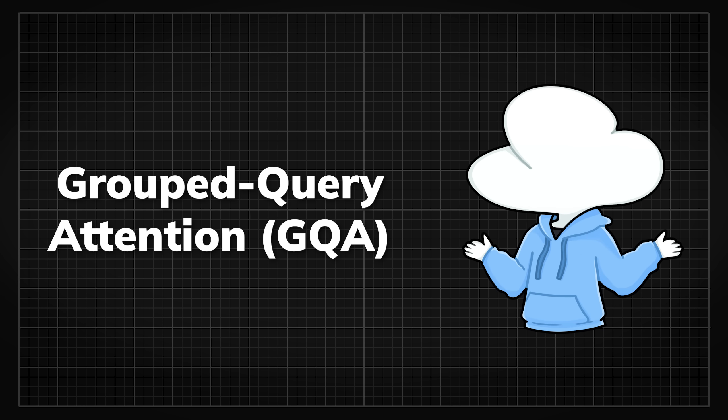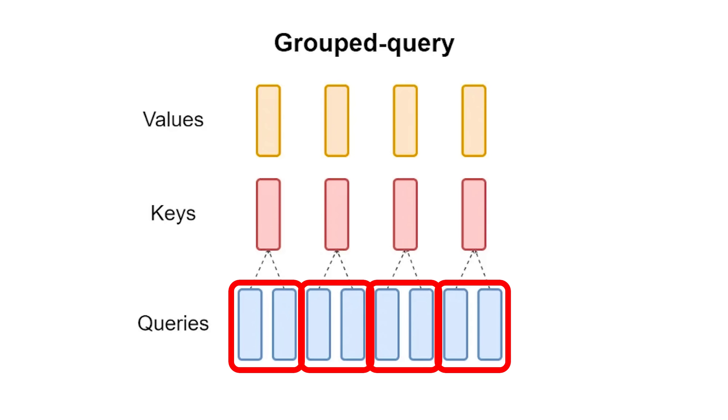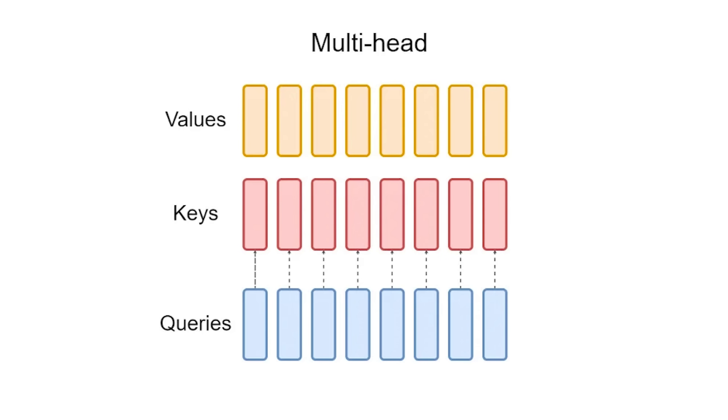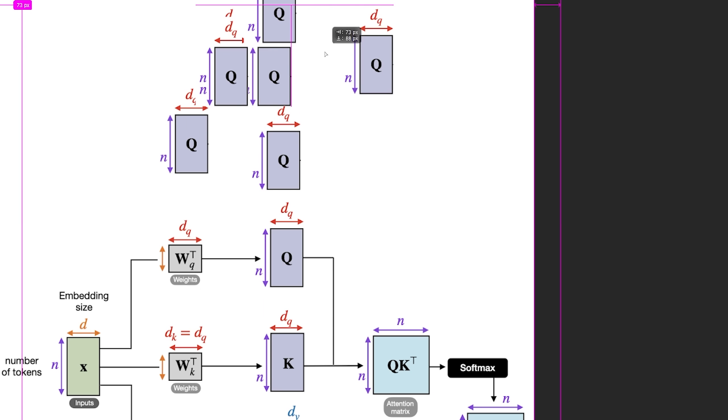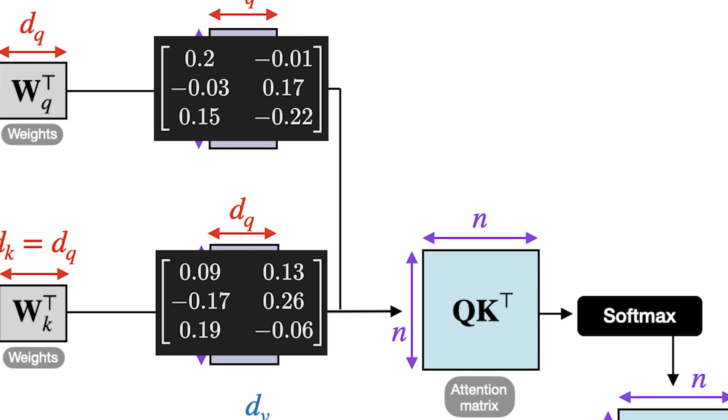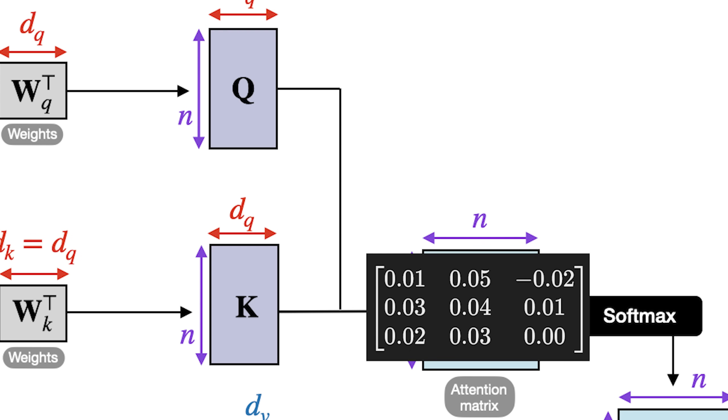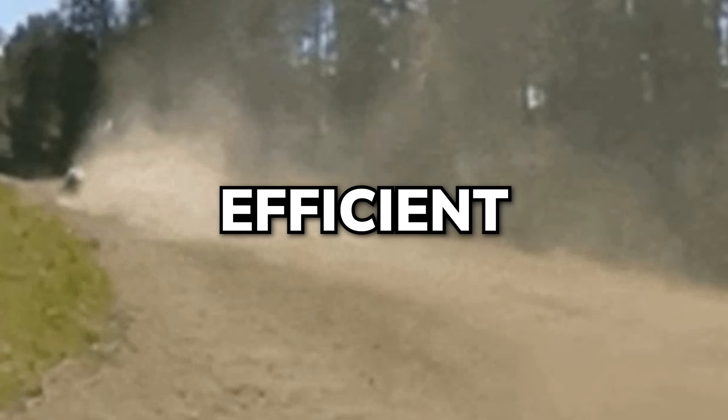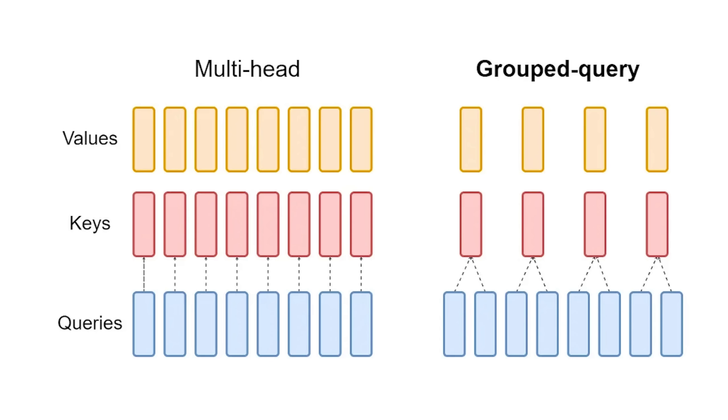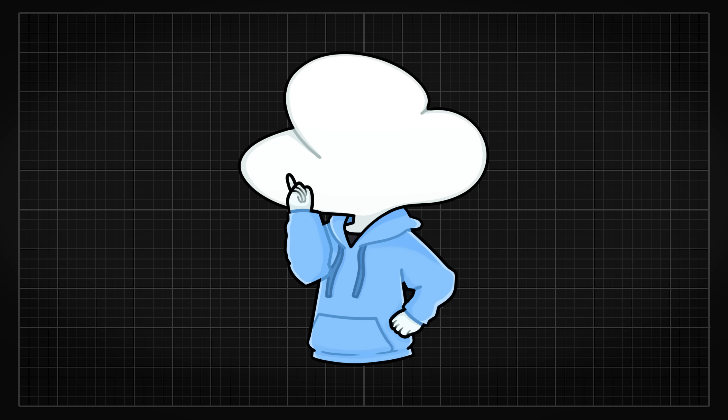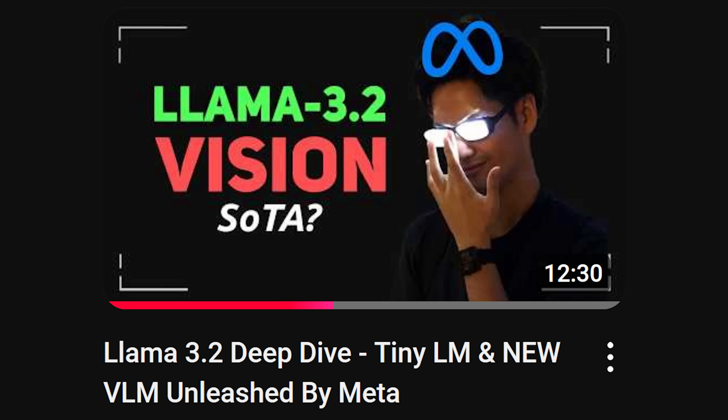This is where group query attention comes in as a more efficient alternative. In GQA, query heads are grouped, and each group shares a common set of key-value pairs. Unlike traditional multi-head attention, where each query head has its own unique set of key-value pairs, GQA reduces the computational load by letting multiple query heads interact with a single shared key-value set. This effectively lowers the number of key-value pairs that need to be processed, making the attention mechanism more memory efficient and faster, especially for longer sequences. And it is this reduction in memory bandwidth and computational cost, while still preserving the essential information flow between tokens, it has become a popular choice for modern large-scale models like Llama 3.2.